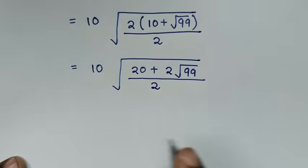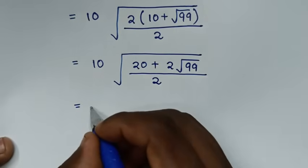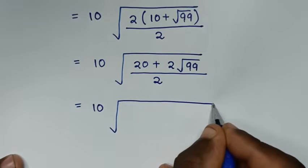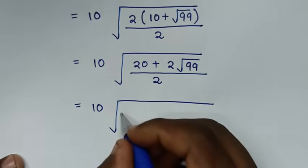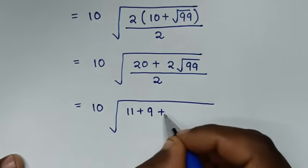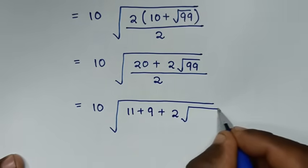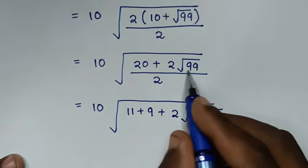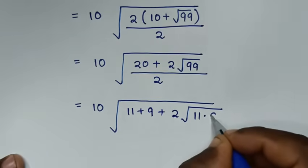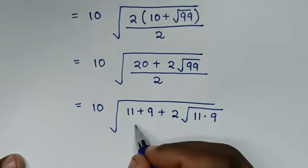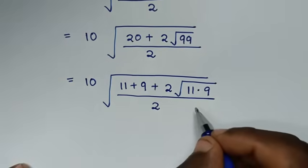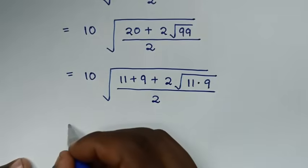In the next step, we rewrite 20 as 11 plus 9, and rewrite 99 as 11 times 9. So we have the square root of (11 plus 9 plus 2 times square root of 11 times 9), all over 2.